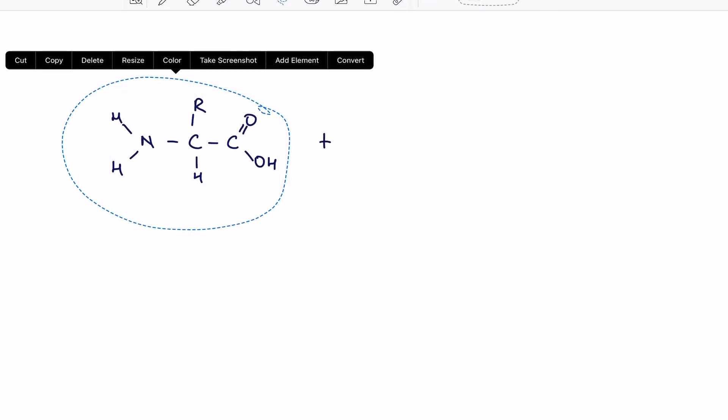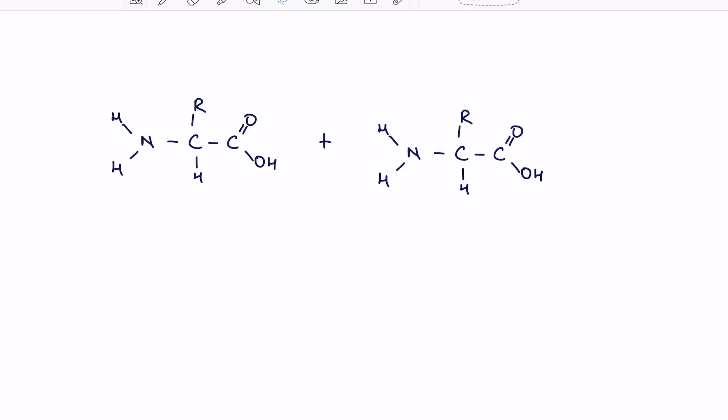So now we're going to go through how to join two amino acids together, so please draw two amino acids side by side. I'm just going to be a bit lazy and just copy this over. When two molecules join together, and this is biological molecules, this is usually due to the condensation reaction.